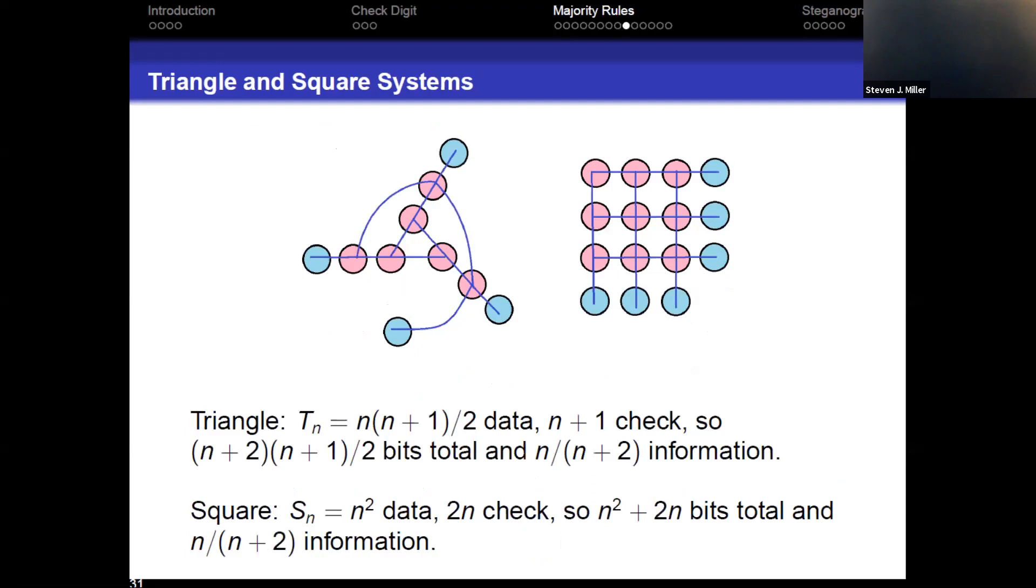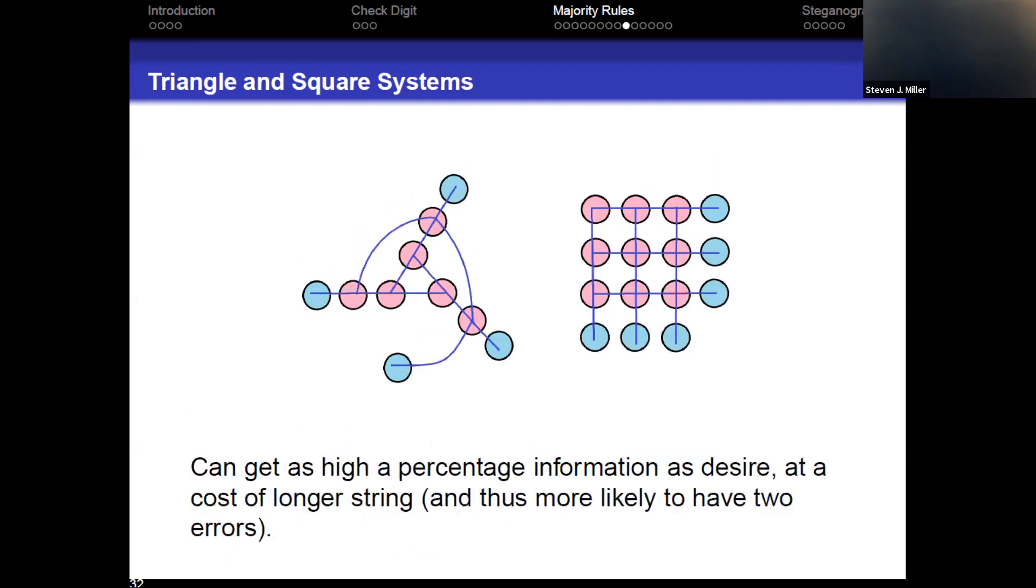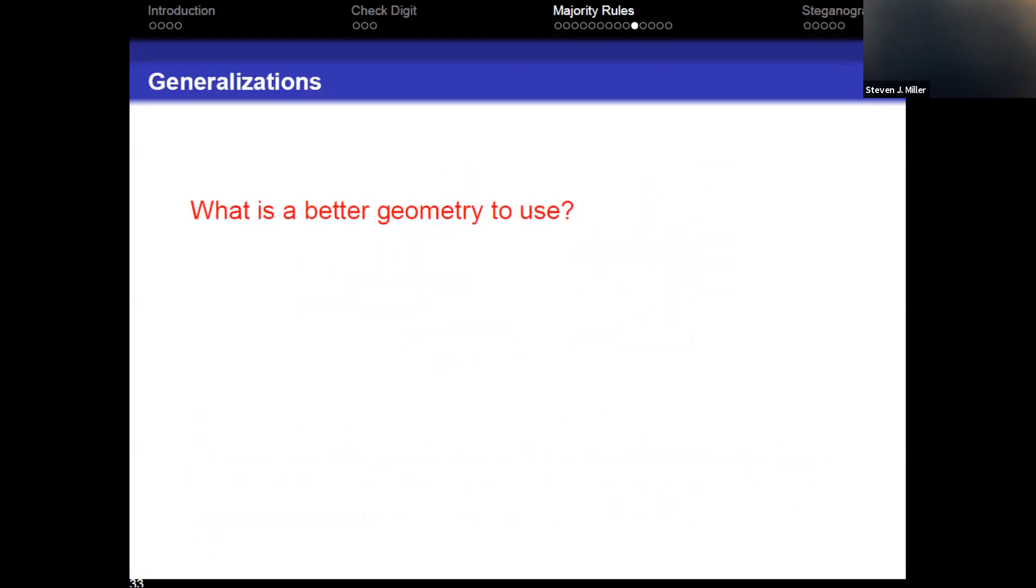So the triangle, the nth triangle number is n(n+1)/2. So if you go through the calculation, you get n/(n+2) is information. So that's really good in the limit. And the square, Sn has n squared, two n are check digits. So you also get n/(n+2). But again, it takes a little bit more. So if there are two bit errors, you're more likely to have that affect you with the square than with the triangle. So we can get as high of a percentage as we want, but the sizes are getting larger and larger. And as the size gets very large, you then do have to start worrying a little bit more about your two bit errors. So is there a better geometry to use?